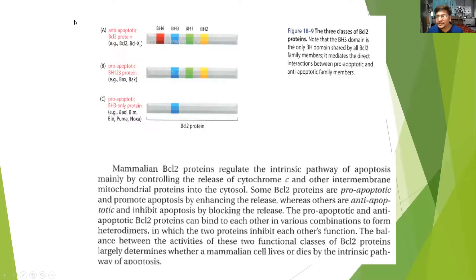The BCL-2 family proteins play a very important role in regulating and affecting the apoptosis process. There are three classes: the first class has BH4, BH3, BH1, and BH2 domains — proteins like BCL-2 and BCL-XL are anti-apoptotic, meaning they do not allow apoptosis to take place. The other two classes are pro-apoptotic: the BH1-2-3 class, which lacks BH4, includes BAX and BAK; and the BH3-only class includes BAD, BIM, BID, NOXA, and PUMA.